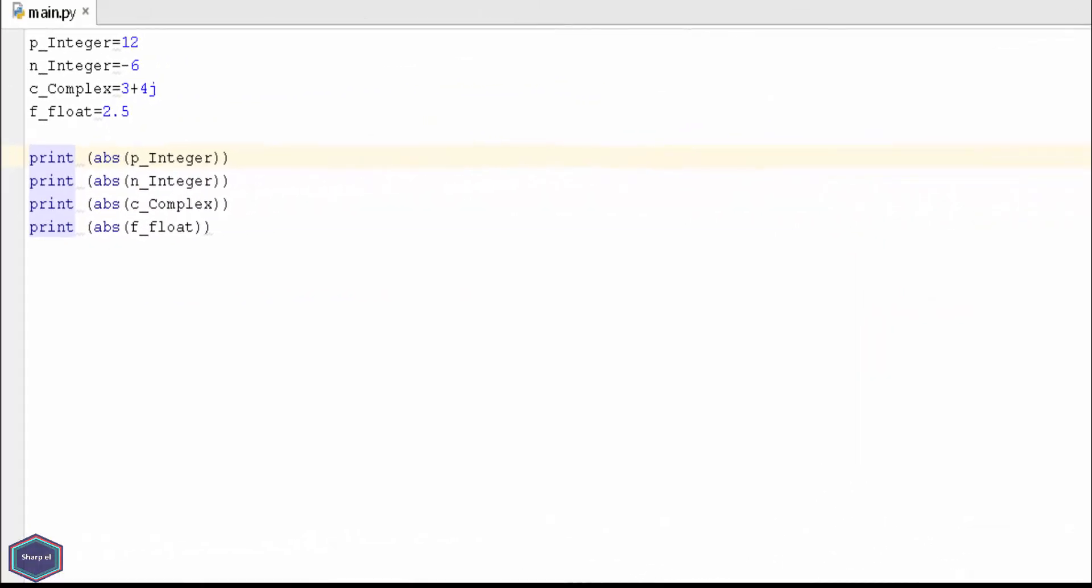Now I have my PyCharm open and I am running Python 3.5. I have declared four different variables: an integer, a negative integer, a complex number, and a float.